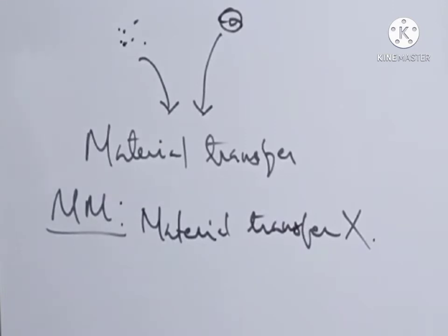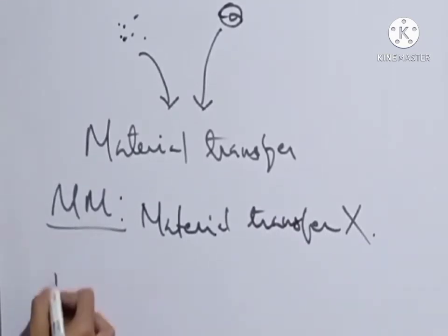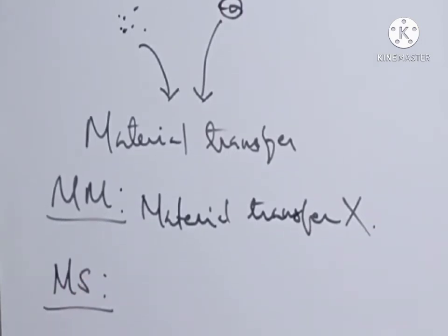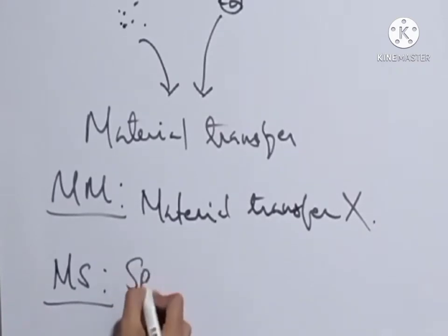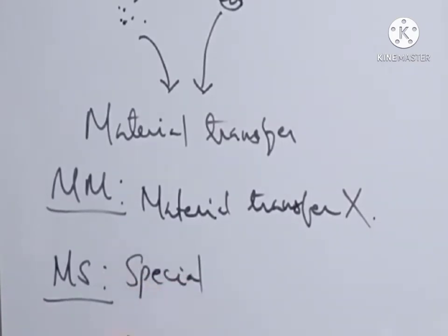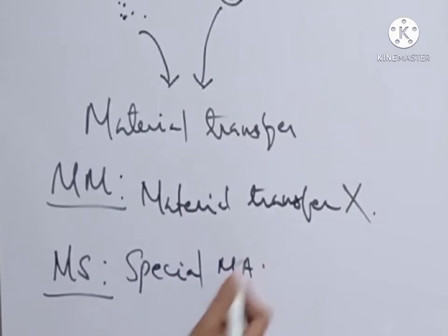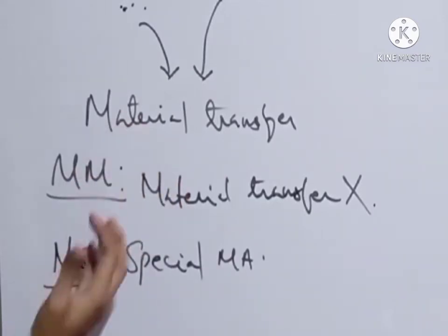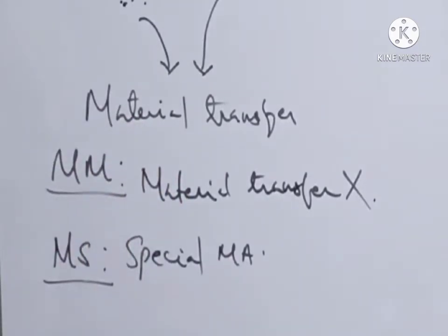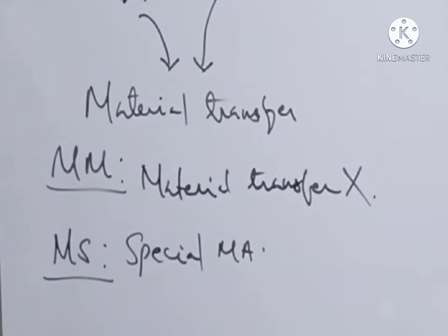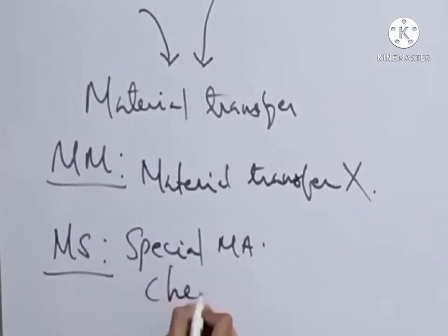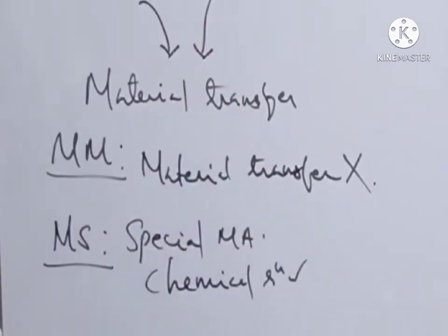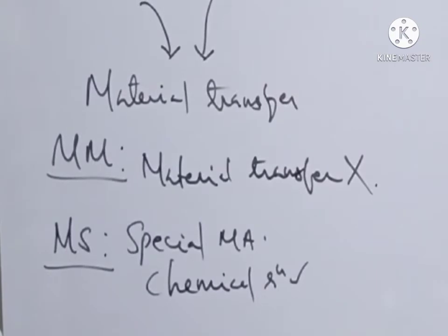The third approach is mechanochemical synthesis. It is a special type of mechanical alloying in which chemical reactions between the powders take place — that is, when mixtures of powders are milled together, chemical reactions also occur along with the milling process.